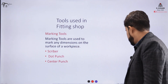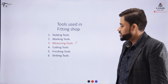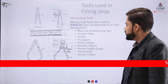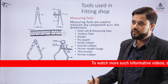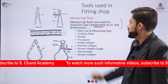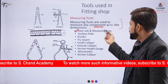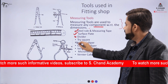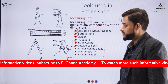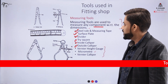We have covered the second topic — marking tools — including the scriber, dot punch, and center punch. Now coming to the third category: measuring tools. As the name suggests, measuring tools are used to measure the dimensions of components that we want to assemble. These include the steel rule or measuring tape, surface plate, divider, tri-square, inside caliper, outside caliper, height gauge, vernier caliper, and micrometer.